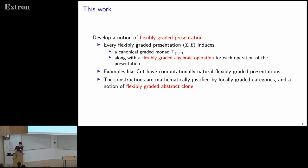The point of this work is to remove this restriction and construct a more general notion of graded presentation that allows presenting things like this naturally. We define a notion of flexibly graded presentation which generalizes the existing notion. Every flexibly graded presentation gives a graded monad that is canonical in some way, and moreover gives a notion of flexibly graded algebraic operation for every operation in the presentation. In particular, this covers the non-determinism example, and we get algebraic operations for non-deterministic choice.